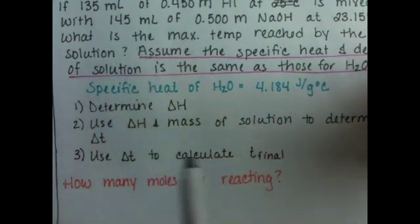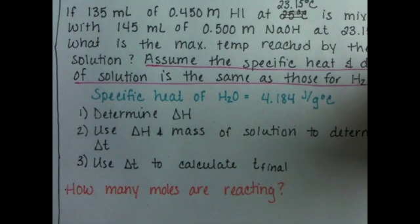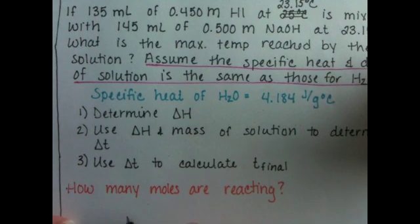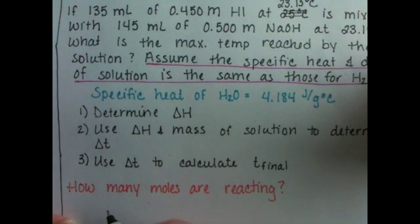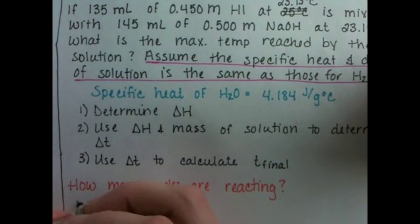So we've got a certain quantity of hydroiodic acid. We have a certain quantity of sodium hydroxide. We need to figure out which one of these is limiting the production of sodium iodide and water. So what we want to do is figure out how many moles of HI we have and how many moles of sodium hydroxide we have, our two reactants.